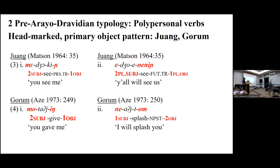We see this across different Munda languages. Here we have Juang and Gutob, two other Munda languages with a similar structure: subject prefix, object suffix. These are head-marking systems.